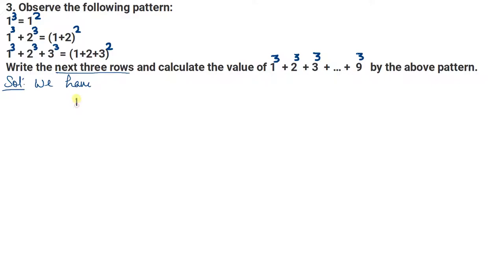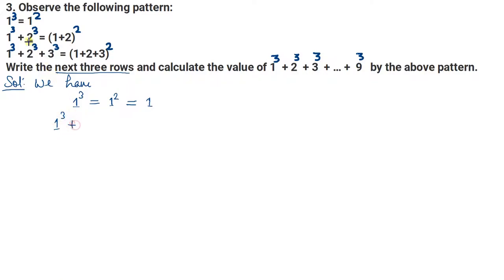हमारे पास जो pattern है वो यह है कि यदि हम one का cube करते हैं तो वही आएगा जो one का square होगा — this is correct, we know this. आगे देखें: 1 cube plus 2 cube is equal to — यह कह रहा है कि यदि हम one का cube करें और two का cube करें, तो इन दोनों का result वही आएगा जब हम one और two को पहले add कर लें।